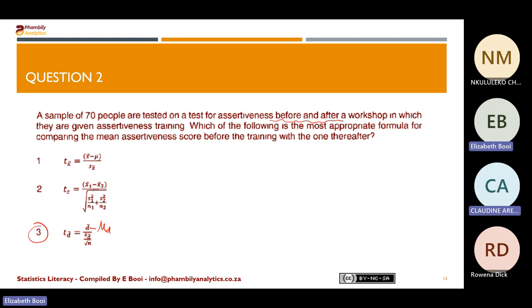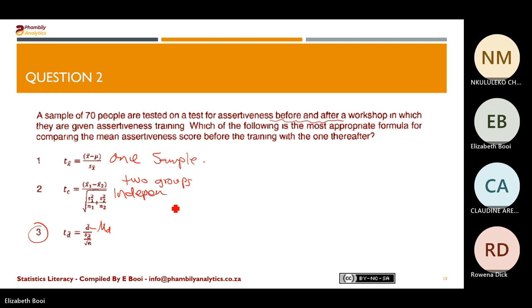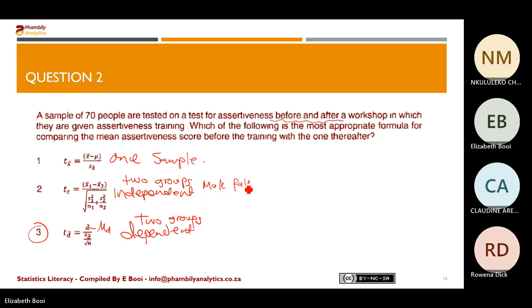To recap on the formulas: option one is hypothesis testing for one sample — we did this previously. Option two is for independent samples — two groups. Option three is for dependent groups — also two groups, but related. With two groups, it will be something like male and female for independent. For one group, they give you the mean and standard deviation of a single population.